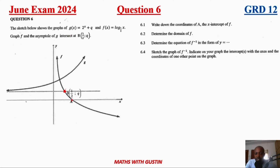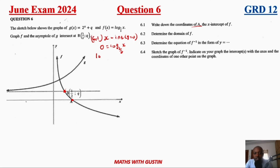Point B is shown on the graph, and point A is the x-intercept of f(x). Question 6.1 asks for the coordinates of A, the x-intercept of f. We find it when y equals zero. So: 0 = log_(½)(x), which means x = (½)^0 = 1. Therefore, A is given by coordinates (1, 0).